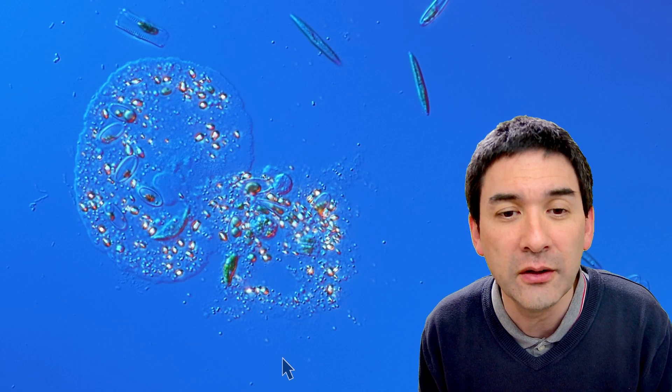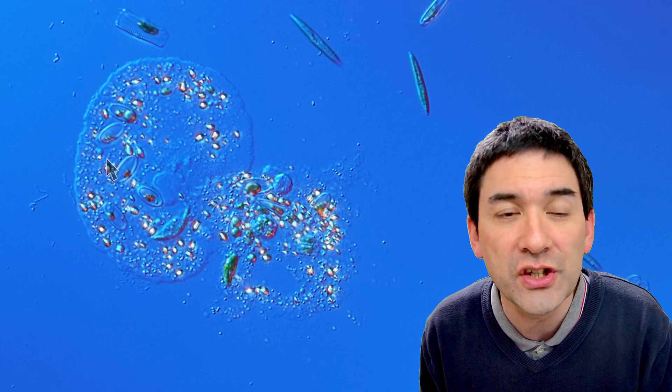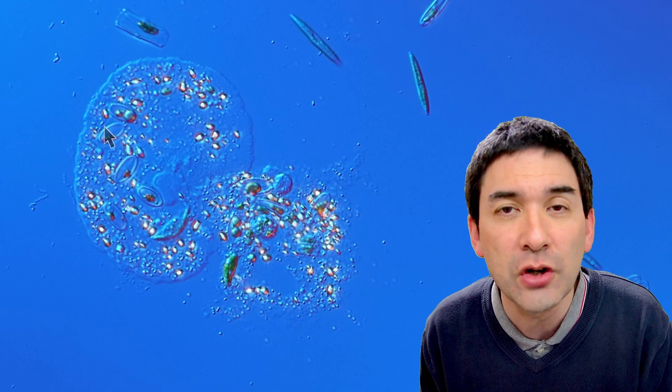And let's turn on the arrow, and what you see over here all of those green little structures and oval structures that you see here, these are diatoms.